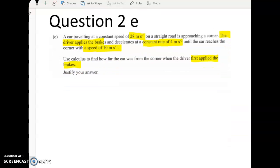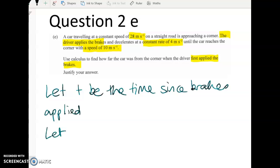So what I would do first in here is to say, let T be the time since brakes applied, and then let S be the distance traveled, or the distance gone, since the brakes were applied.